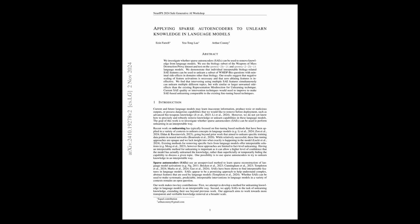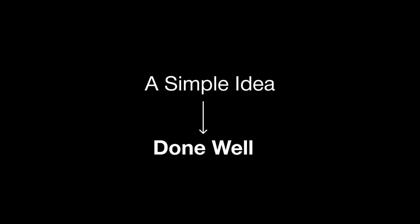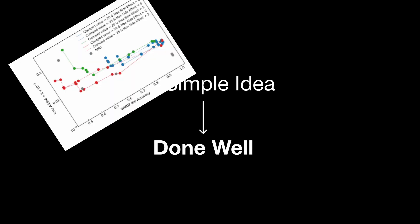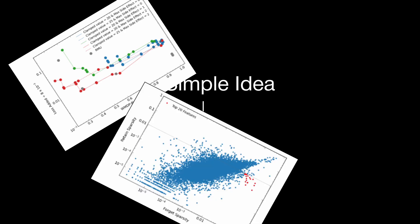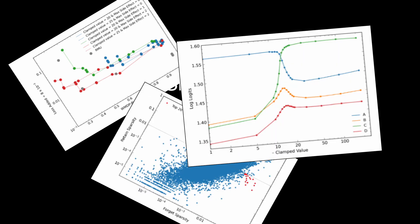Hi there, today I'm talking about a paper I love: 'Applying Sparse Autoencoders to Unlearned Knowledge in Language Models' by Farrell, Lau, and Konmi. I love this paper because it takes a simple idea and applies it extremely well in experiments and results that are presented in clear ways. Let's dive in.